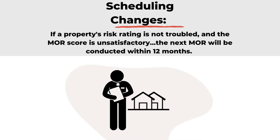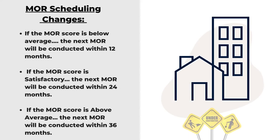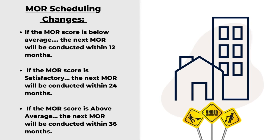Likewise, if the score on the MOR conducted on or after the effective date is below average, the next MOR will be conducted within 12 months. If the score on the MOR conducted on or after the effective date is above average, the next MOR will be conducted within 24 months.